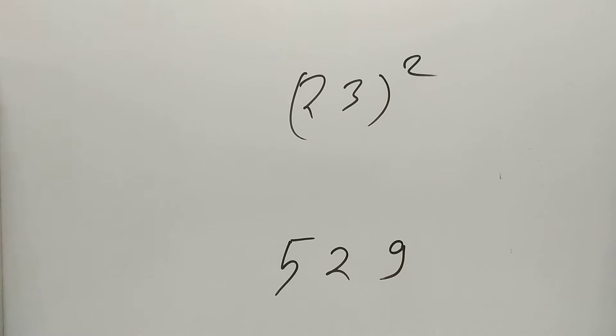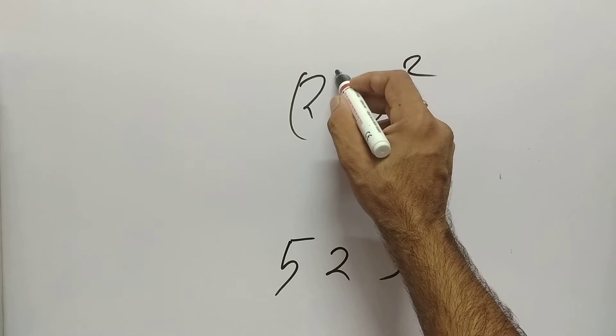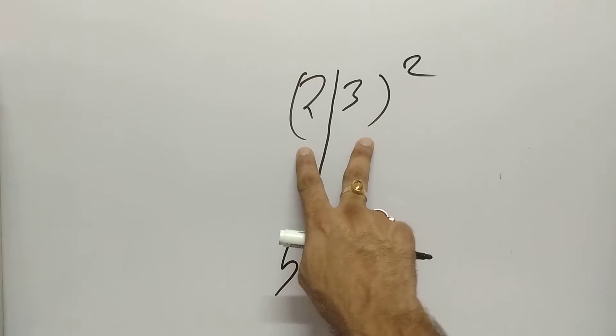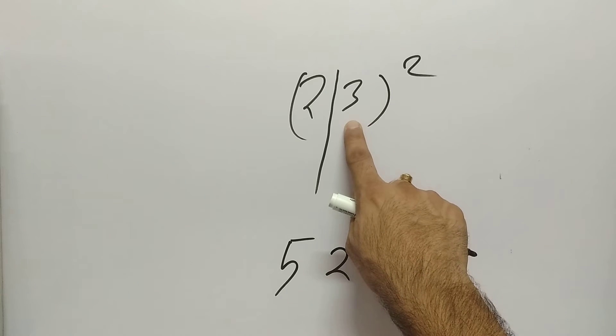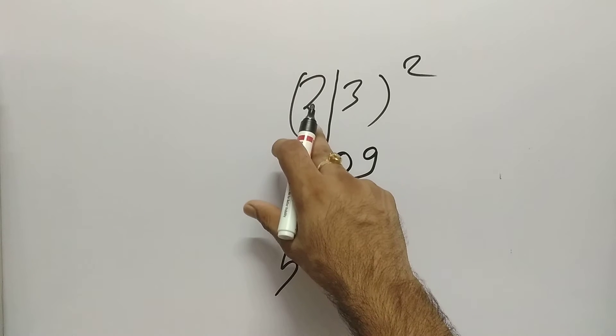The technique is very simple. What we are going to do is we will make two pairs and after that we will square 3. Square is 9, so we will write like 09. 2 square is 4.